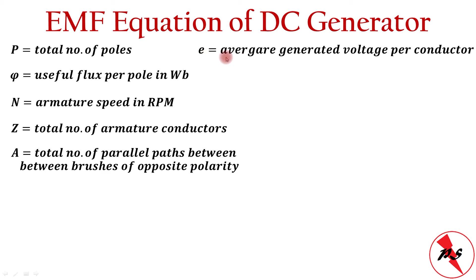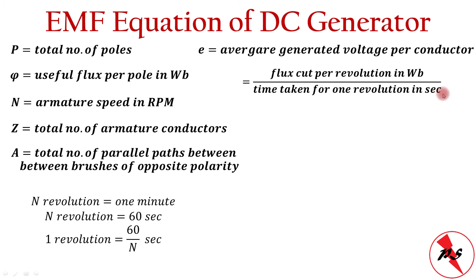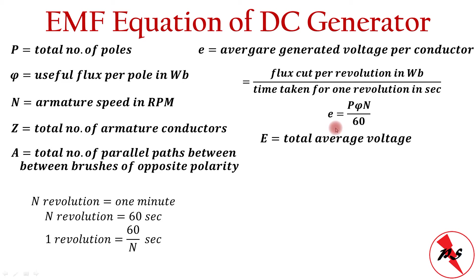We now find the average generated voltage per conductor. The voltage in a single conductor equals the flux cut per revolution in Webers divided by the time taken for one revolution in seconds. Since the armature rotates at N RPM, there are N revolutions per minute, meaning N revolutions in 60 seconds, so the time for one revolution is 60/N seconds. Therefore, the average voltage per conductor is Pφ N/60.